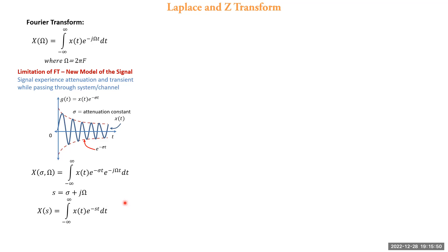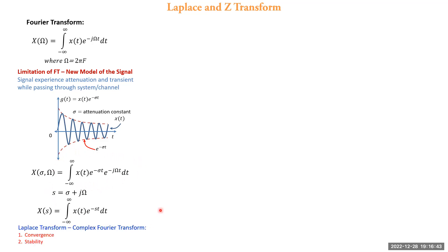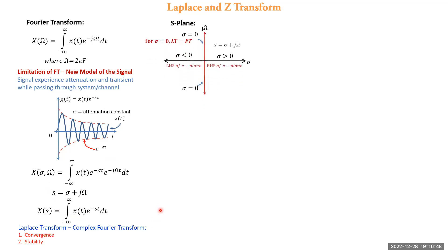Now, what are the implications of the real term e^(−σt)? This will result in an attenuation term in the integration that can cause divergence of the integration evaluated from minus infinity to plus infinity. Therefore a new concept for validity of the integration came into existence, called convergence, and in turn convergence is related to the stability of the system.